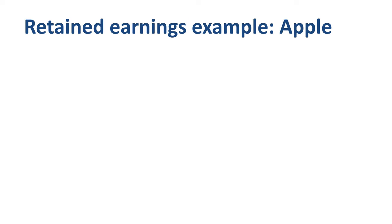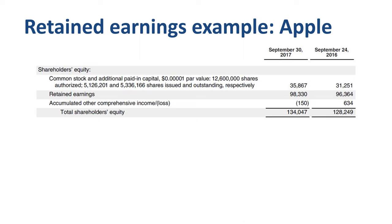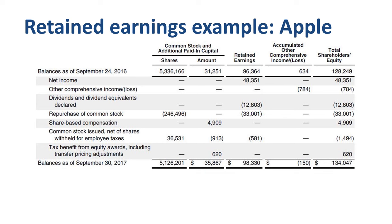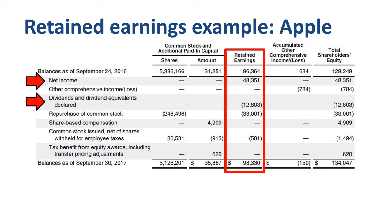A second example to understand retained earnings better is Apple Inc. fiscal year 2017. Equity was $128.2 billion at the end of fiscal 2016 and $134 billion at the end of fiscal 2017. Retained earnings grew from $96.4 billion to $98.3 billion. This more detailed overview shows how the equity balance and its components developed year over year. Net income makes retained earnings go up, and dividends paid to shareholders makes it go down.